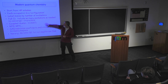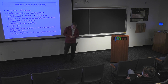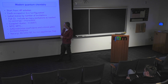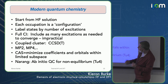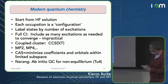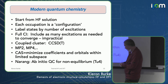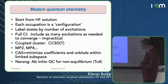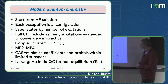You start from the Hartree-Fock problem, and each occupation of the Slater determinant is called a configuration. You label states by the number of excitations, and full CI — configuration interaction — includes as many excitations as you need to converge. The standard method that people use is coupled cluster, singles and doubles with perturbative triples (CCSD(T)), and there's also perturbation theory at second and fourth order. For complicated multi-reference systems, where you need several Slater determinants to even get close, there's the complete active space method, where you minimize both the coefficients and the orbitals simultaneously in a limited subspace.